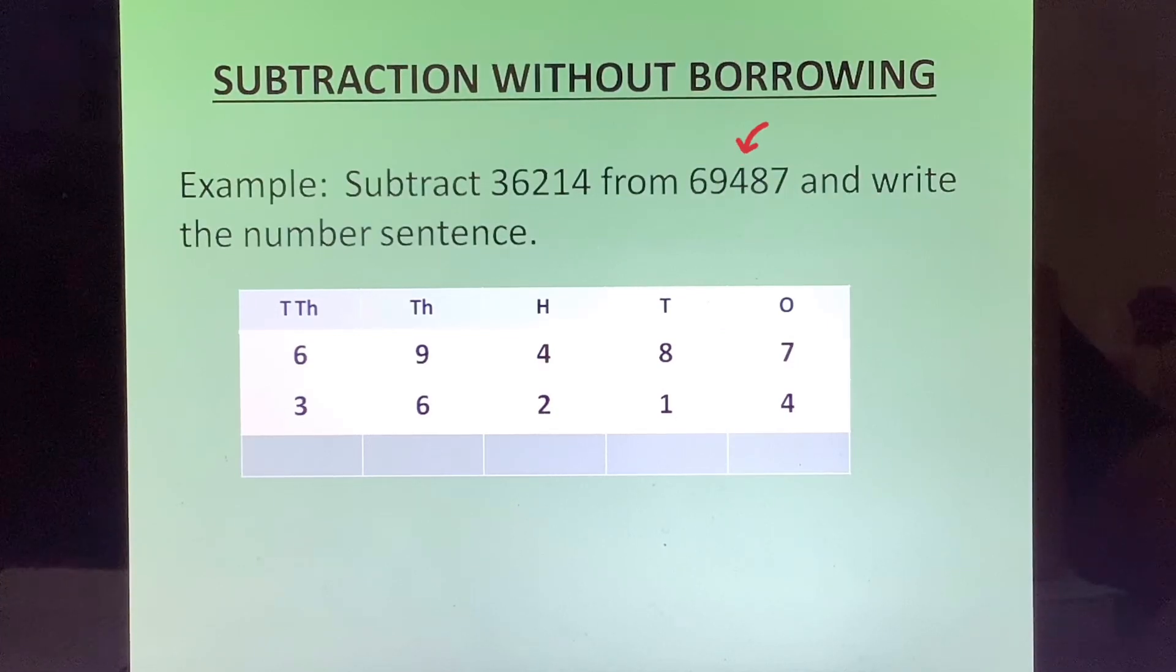That is a point that you will have to note because we have to subtract this number 36214 from 69487. From whichever number you have to subtract, that number you have to write on top. Now we will start subtracting from the right.